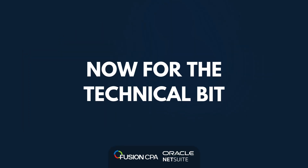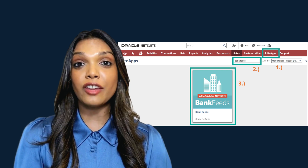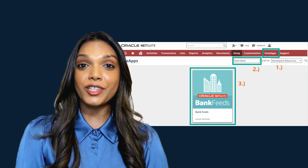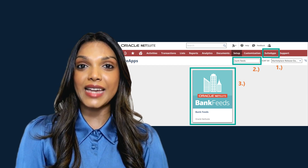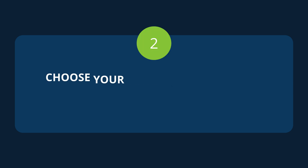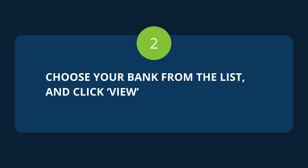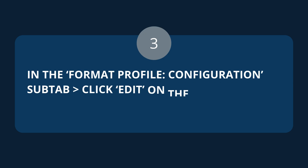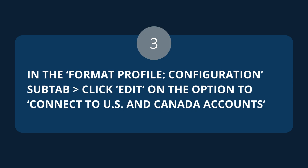Now for the technical bit. To connect your bank accounts to NetSuite, you'll need to install the NetSuite Bank Feed Suite app. From here, the connection process is as follows. In NetSuite, go to Setup, Accounting, Financial Statements, Financial Institution, List. Choose your bank from the list and click View. In the Format Profile Configuration sub-tab, click Edit on the option to connect USA accounts and Canada accounts.